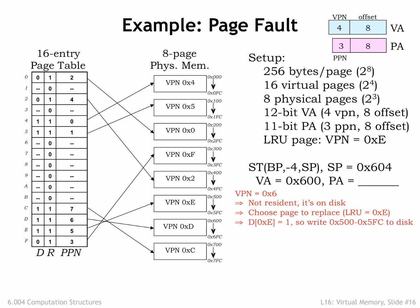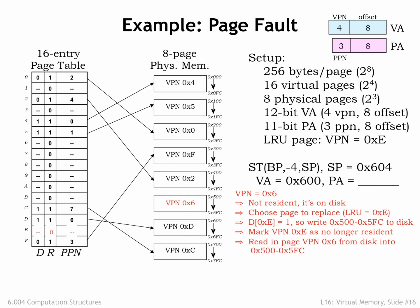The page table entry for VPN E has D equal 1, so the handler writes the contents of VPN E, which is found in physical page 5, to secondary storage. Then it updates the page table to indicate that VPN E is no longer resident. Next, the contents of VPN 6 are read from secondary storage into the now available physical page 5.